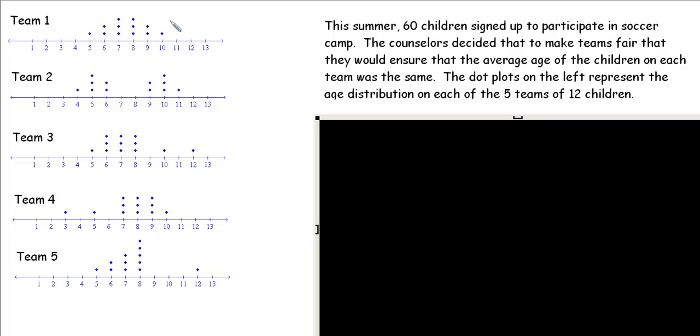Each age allotment for the team is depicted in the dot plot. Each dot plot tells us some things about the data distribution in a different way. Let's take a look at Team 1. Let's go ahead and find some of our measures of central tendency.